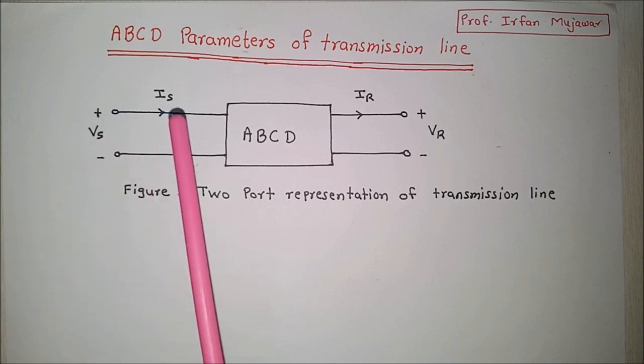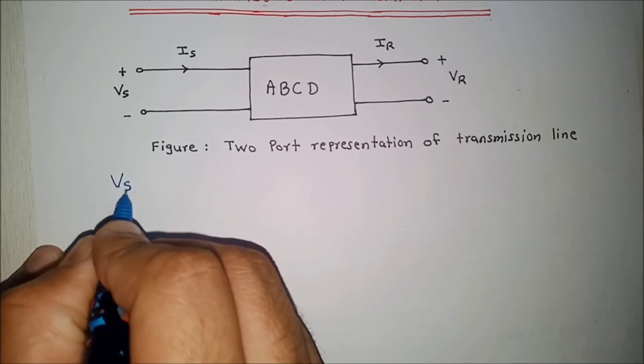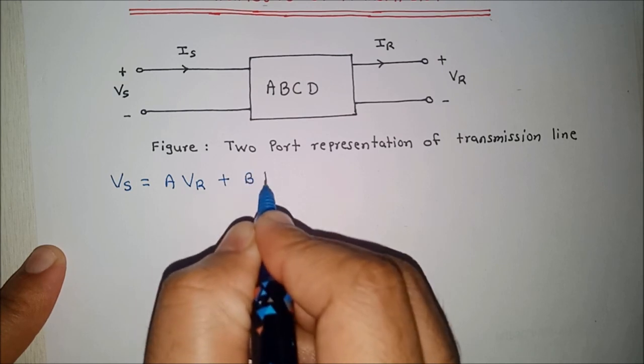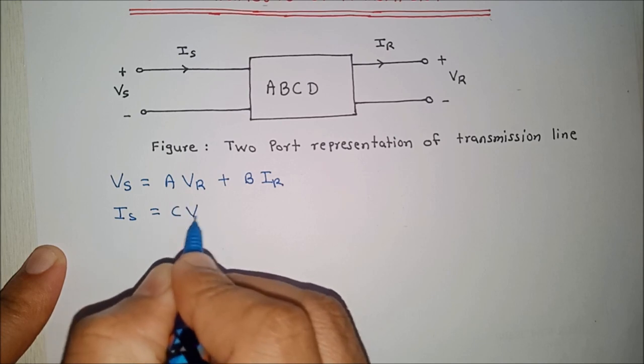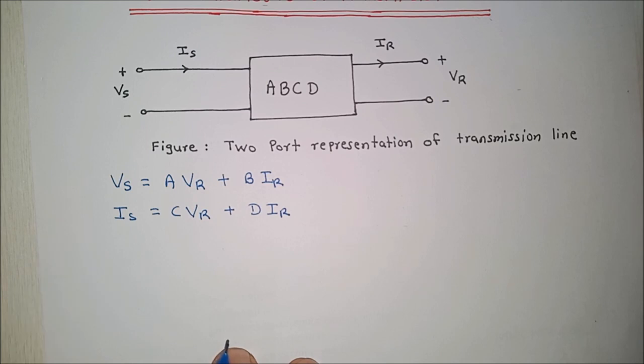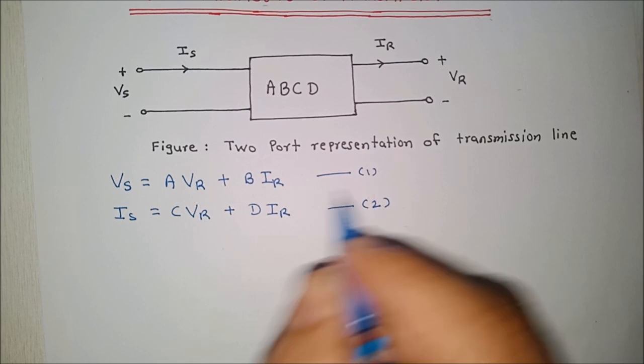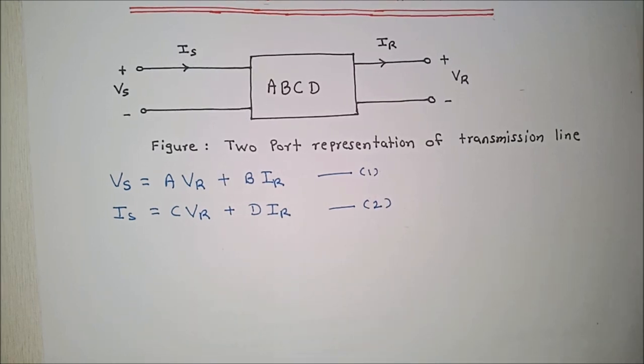Now we can express Vs and Is in terms of Vr and Ir as follows. We can write Vs equal to A·Vr plus B·Ir, Is equal to C·Vr plus D·Ir. So let us call this as equation number 1, equation number 2. So Vs, Is are the sending end voltages and current respectively.